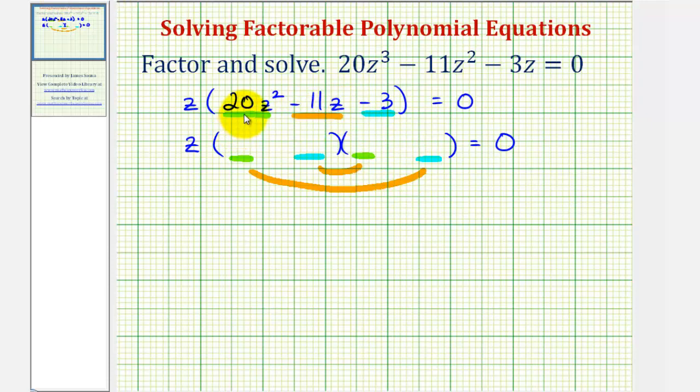So to begin, let's consider the factors of 20z squared. Well, we could use 4z and 5z, 2z and 10z, or 20z and 1z. Let's go ahead and use the two factors that are closest together, meaning 5z and 4z.